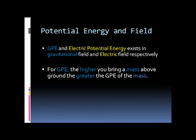For Gravitational Potential Energy, it must act on an object with mass. The higher you bring a mass above the ground, the greater its Gravitational Potential Energy, because a gravitational field acts on the mass above the ground. The further you move the mass away from the ground, the more energy you give it, as you are moving it in the opposite direction to the field.